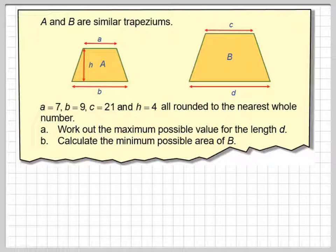All rounded to the nearest whole number. So we work out the maximum possible value for the length d, and calculate the minimum possible area of B.